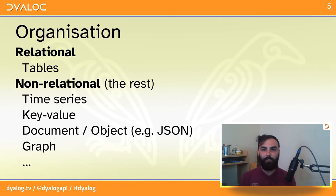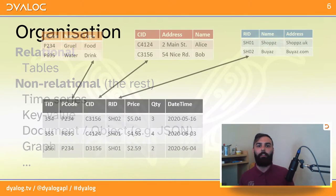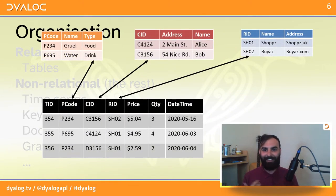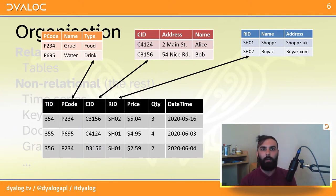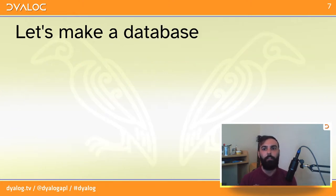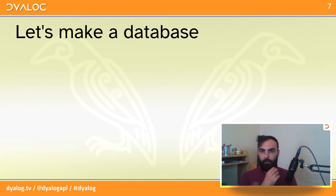We're going to focus on relational databases today. The comforting thing is that the organization model should be quite familiar for APL users because it's all basically tables. And as we know, APL handles tabular data quite nicely. So let's make a relational data model that we can then use as an example for some other considerations.